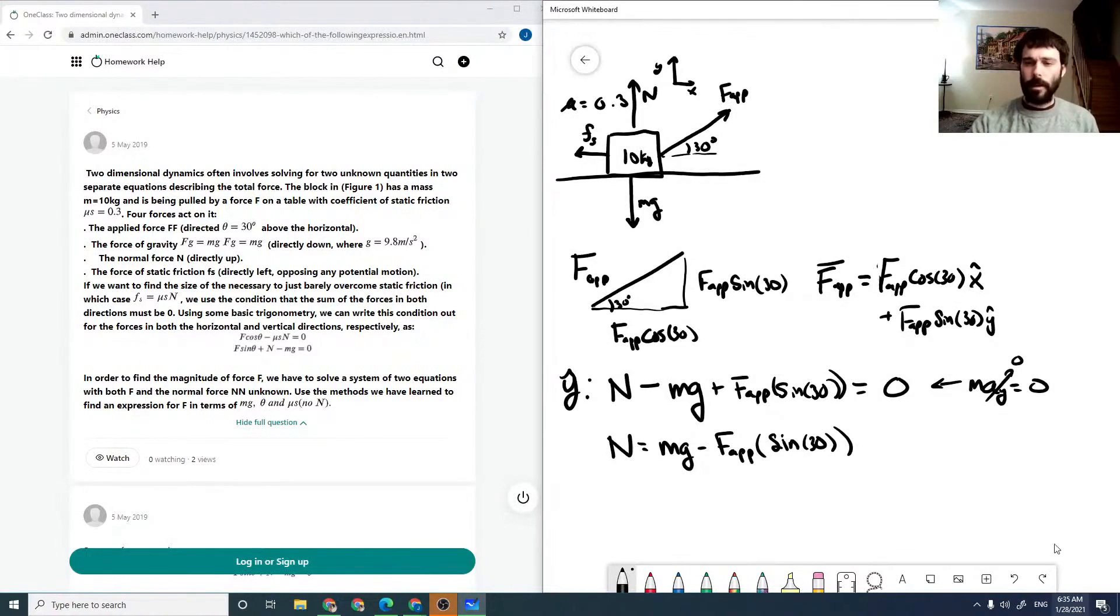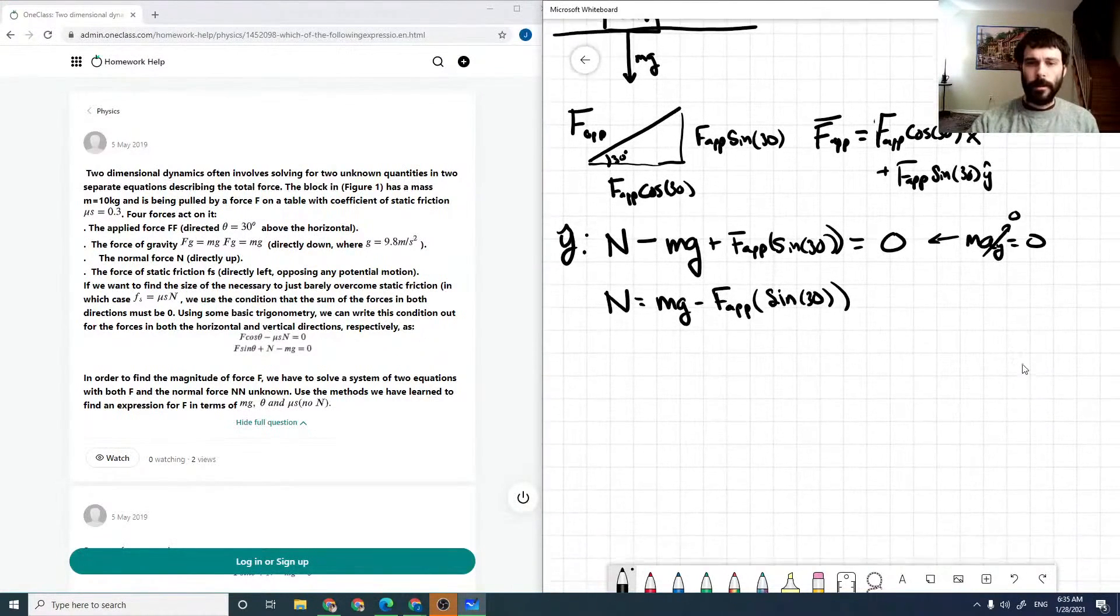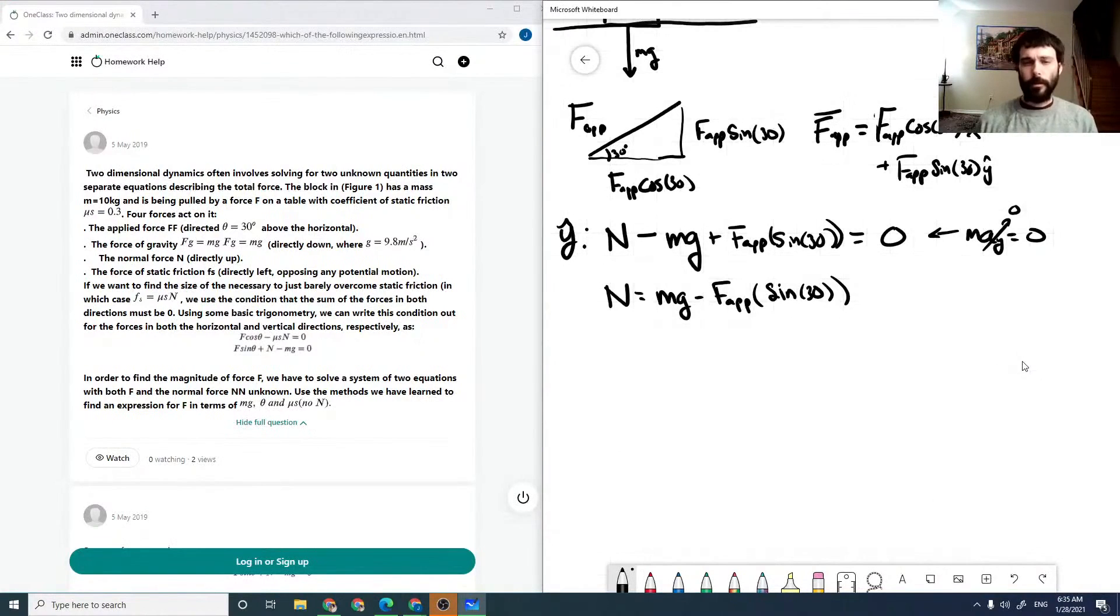Now the reason why we solve for our normal force is because our frictional force is always given by our coefficient of friction times our normal. So in this case it is given by this.